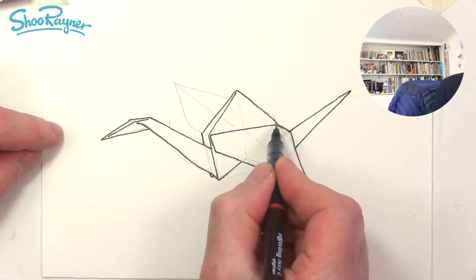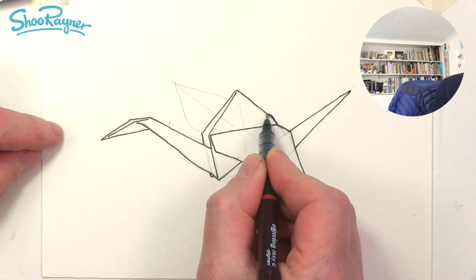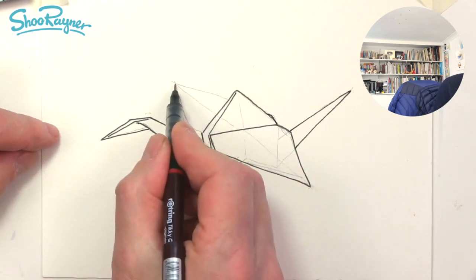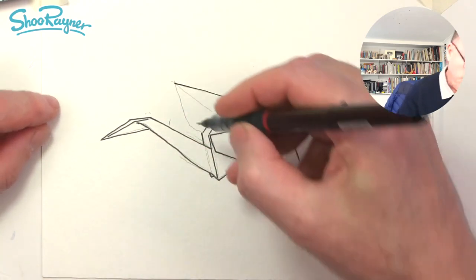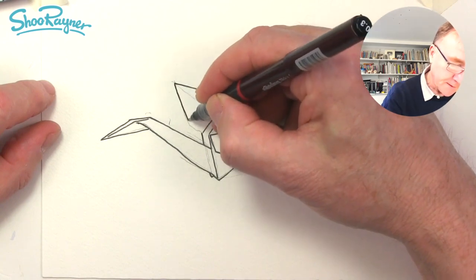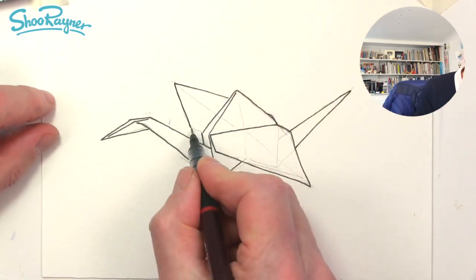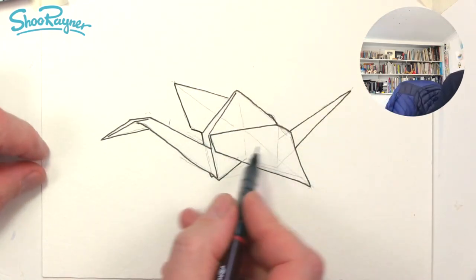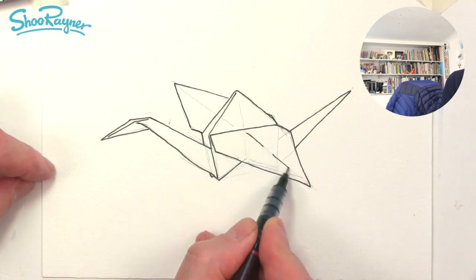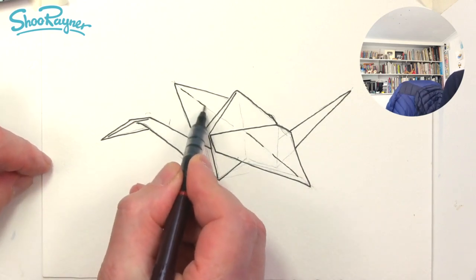And then the rear wing—you're going to see hardly any of that little part there—and then this is going to come there and finish off there. And then we can maybe do some very fine kind of fold lines like that.